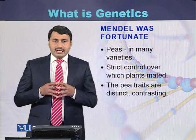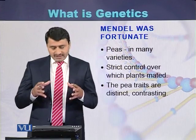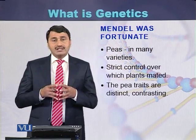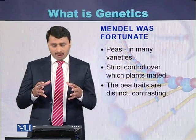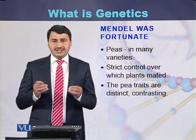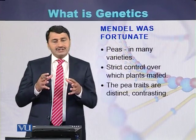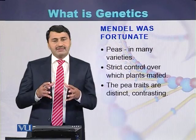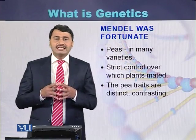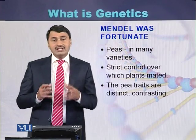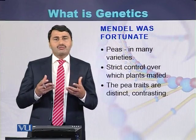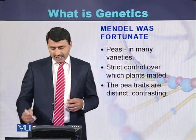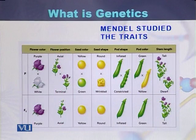When Mendel was performing his genetics experiments, he had strict control over the different plants he mated. The traits of the garden pea were clearly contrasting and clearly distinct from each other. These were the major properties that helped Gregor Mendel in the formulation of the laws of heredity.